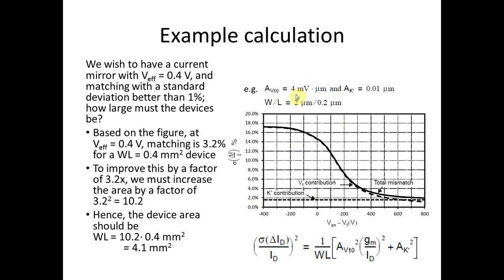Now remember, that is specifically for a device with this area. W times L is actually 0.4 microns squared. It's not millimeters, it's micrometers, of course. Now, 3.2% is too much mismatch. In the problem statement, we were trying to get 1% mismatch. So that means we have to improve that number by a factor of 3.2. So in order to improve that mismatch by that factor, we have to simply make the current mirror transistors bigger by a factor of 3.2 squared, which means a factor of 10.2. So therefore, the way to achieve this is to make the device area 10.2 times 0.4 micrometers squared. So the device area has to be 4.1 micrometers squared in order to get 1% matching with this value of V effective and in this process.